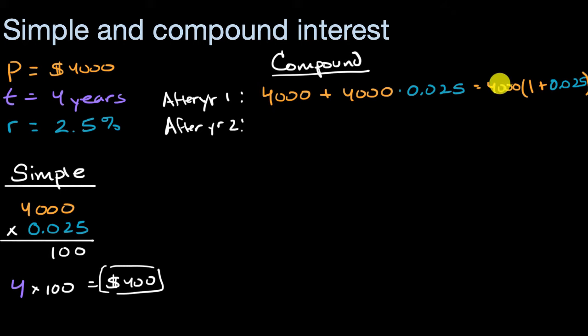And what we're going to do in year two is we're going to take this amount. We have 4,000 times one plus 0.025, two and a half percent. So that's the amount that we had after year one.